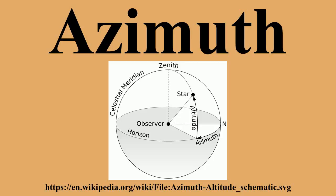An example is the position of a star in the sky. The star is the point of interest, the reference plane is the horizon of the surface of the sea, and the reference vector points north. The azimuth is the angle between the north vector and the perpendicular projection of the star down onto the horizon. Azimuth is usually measured in degrees.